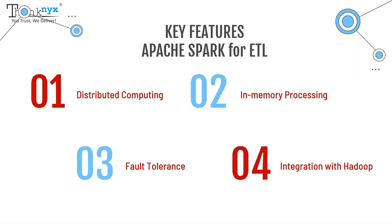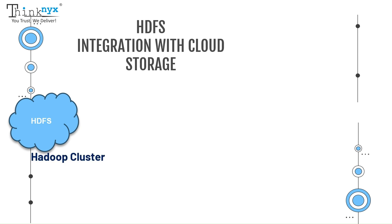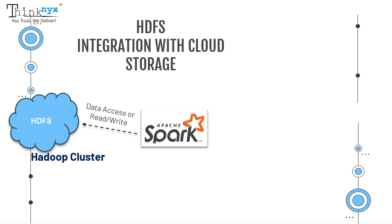Now let's dive deeper into HDFS — the Hadoop Distributed File System — and its association with Apache Spark, especially when dealing with cloud storage. HDFS is a distributed file system designed to store large volumes of data across multiple nodes in a Hadoop cluster. It is optimized for high throughput access to large datasets. Apache Spark can read and write data to HDFS, making it an excellent choice for big data processing. When your data is stored in the cloud or on a Hadoop cluster, Spark allows you to access the data efficiently.